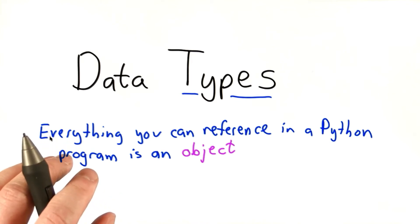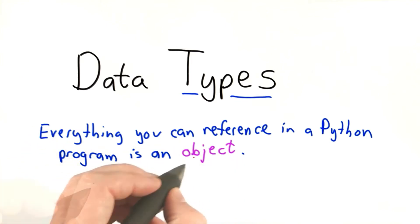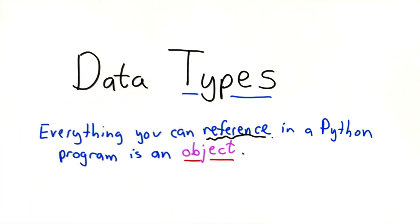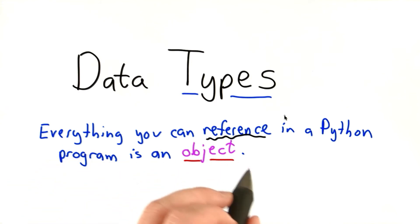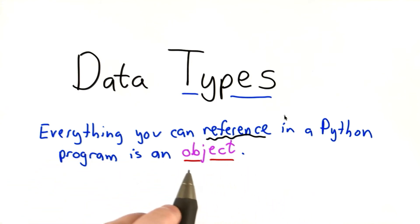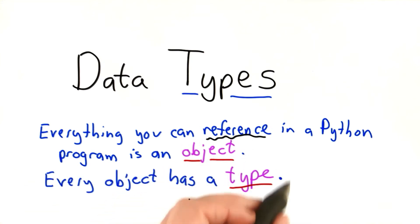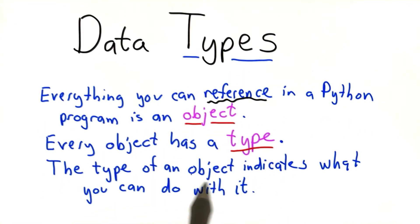First I want to introduce some terminology. Everything that you can reference in a Python program is an object. What does it mean to be able to reference something? Well, that means we can give it a name. There are lots of ways to give things names — you could pass it as a parameter, you could use it in an assignment. Anything that could be assigned to a name is an object in Python. Every object has a type. We can think of types as sets of values, and the type of an object tells us something about what we can do with it.